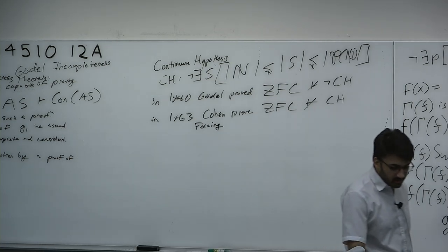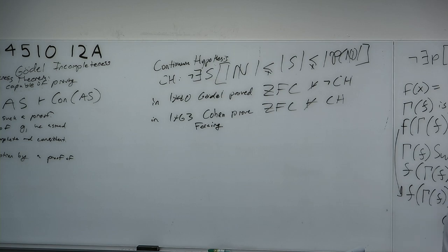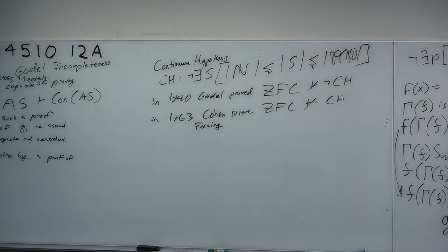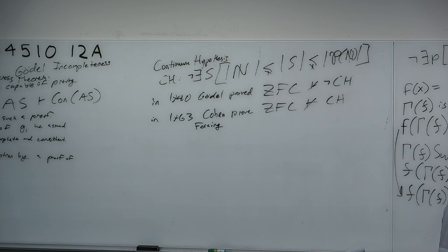Neither model of set theory you derive gets an inconsistency. You can assume the continuum hypothesis or its negation just fine — you'll never derive 0 equals 1, so there is no hint as to whether it is true or false.